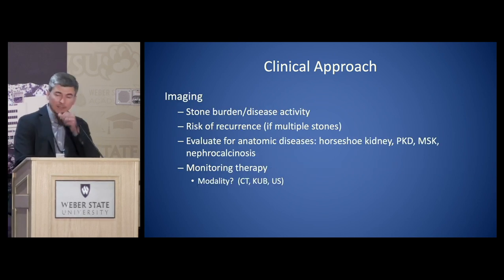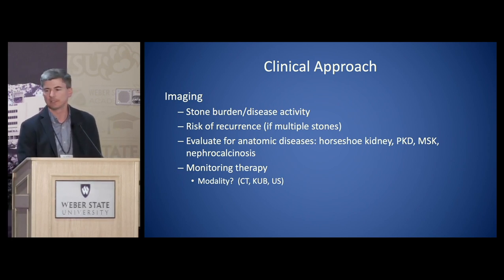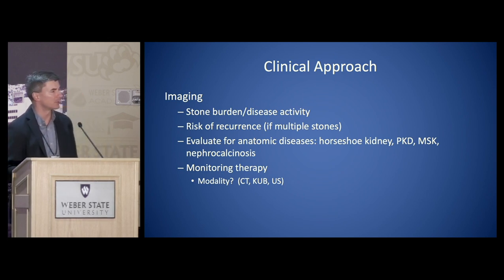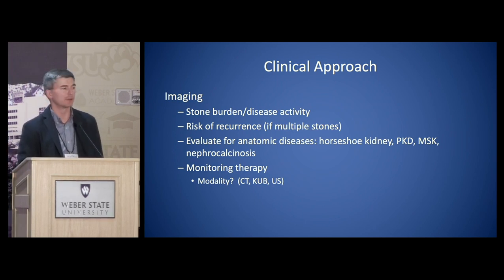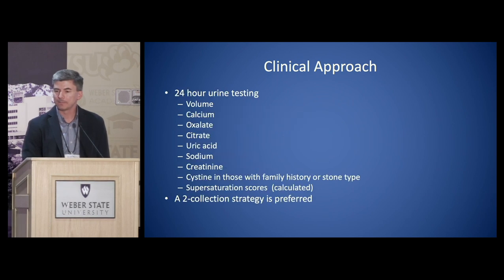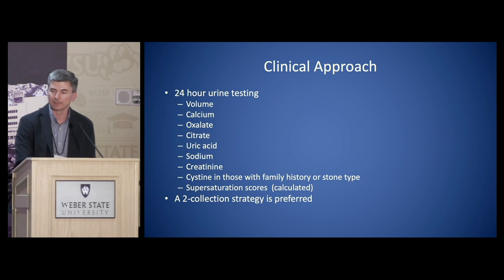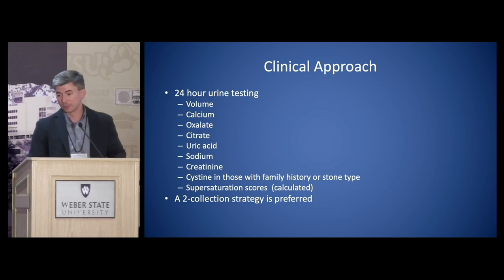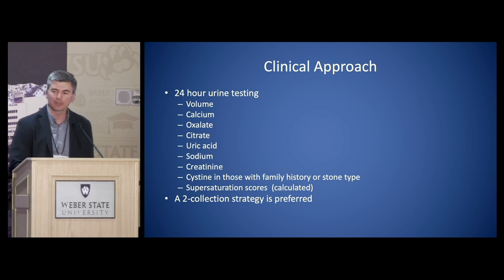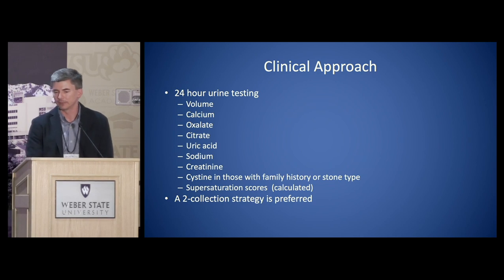I also look through imaging to assess their stone burden and monitor disease activity. I try to get a sense of their risk of recurrence and look for any anatomical issues that might predispose them to forming stones. I use imaging for monitoring therapy as well — once on a prevention regimen, we want to confirm they're not growing new or bigger stones. And then I'll do a 24-hour urine, which includes several elements I'll go through later. The supersaturation scores are calculated, and we use these to understand a person's predisposition to forming stones. A two-collection strategy is generally preferred.